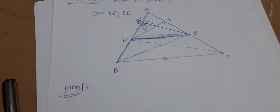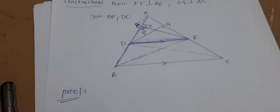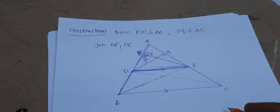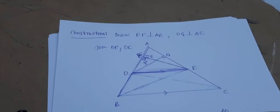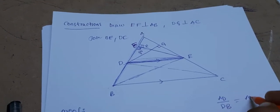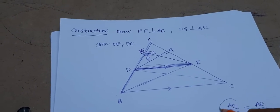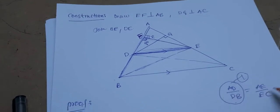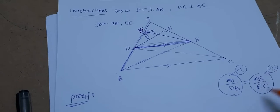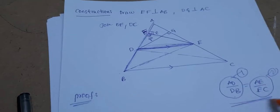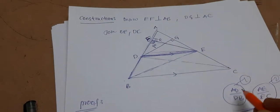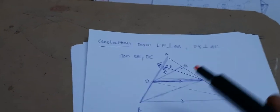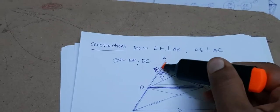Do you know the area of a triangle formula? It is half times base times height. To prove AD/DB equals AE/EC, our first target is to show this as equation 1. The next target gives equation 2, and from equations 1 and 2 we will get the result. So for AD/DB, where is AD in the figure?